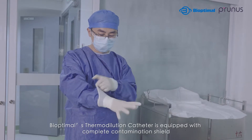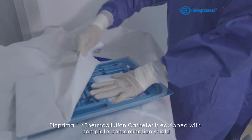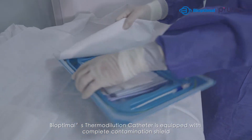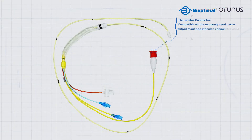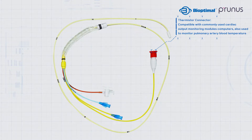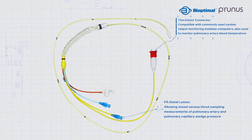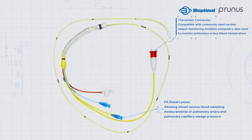The Bioptimal Thermal Dilution Catheter is equipped with a complete contamination shield, and is composed of four lumens. The thermistor connector is compatible with commonly used cardiac output monitoring modules and computers, and is also used to monitor pulmonary artery blood temperature. The PA distal lumen allows mixed venous blood sampling and measurements of pulmonary artery and pulmonary capillary wedge pressure.